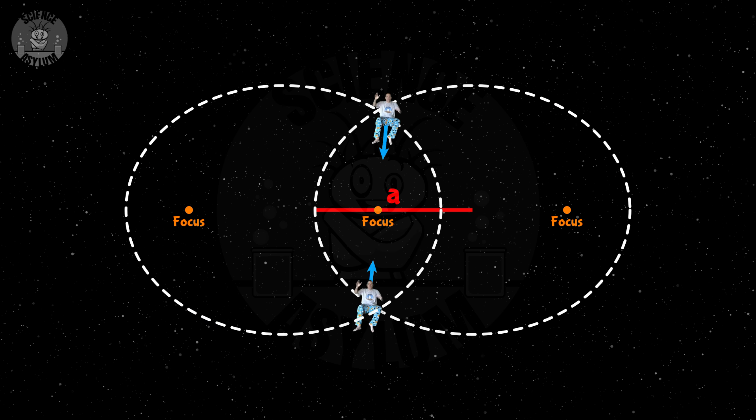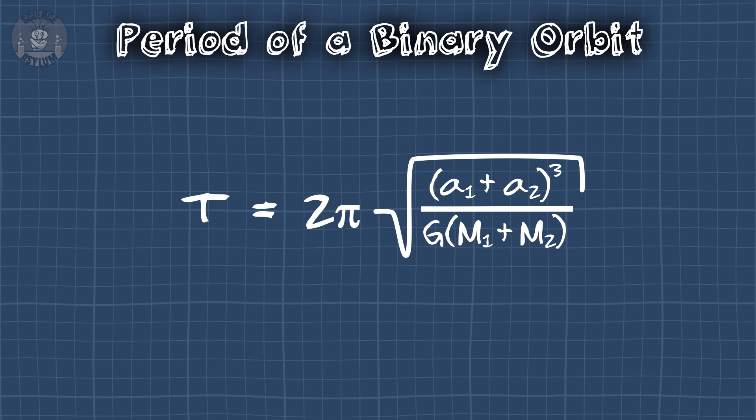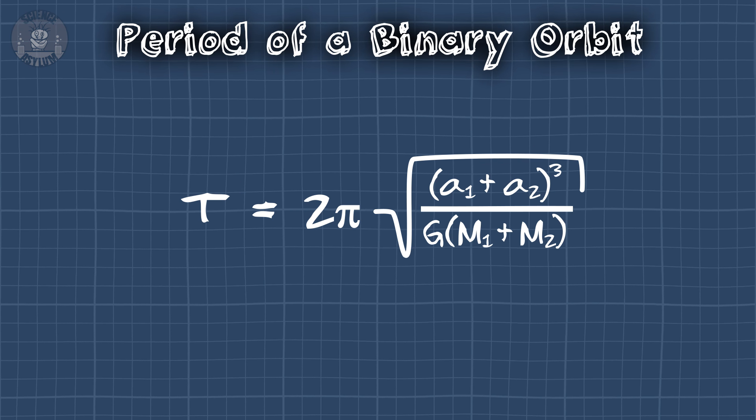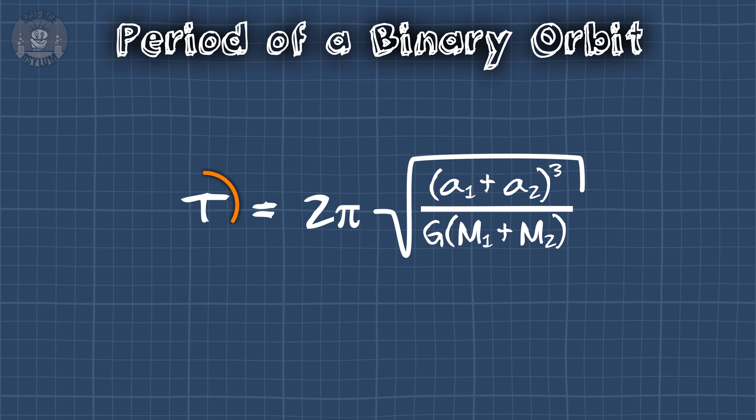We also know their motion is periodic. My clones will always return to their original starting places after a certain amount of time. That time is called the period and is given by this simple equation. If we know the semi-major axis of each clone's path and we know the mass of each clone, we can find their orbital period.